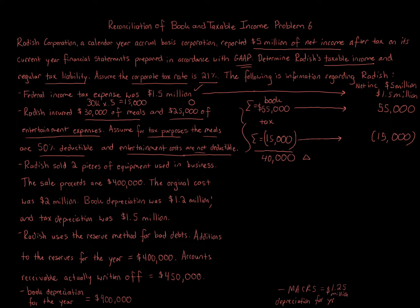The next item deals with the sale of two pieces of equipment. Sales proceeds are $400,000 and original cost was $2 million. The difference between book and tax treatment comes from different depreciation amounts: book depreciation was $1.2 million and tax depreciation was $1.5 million.